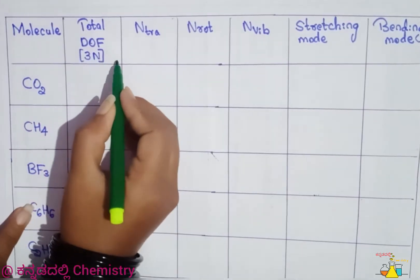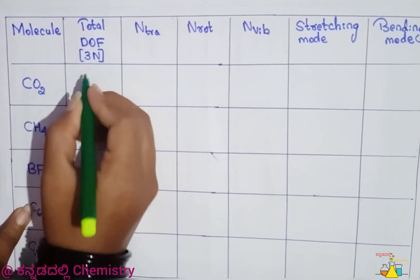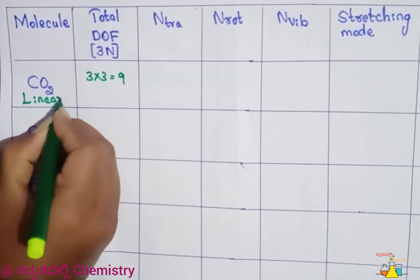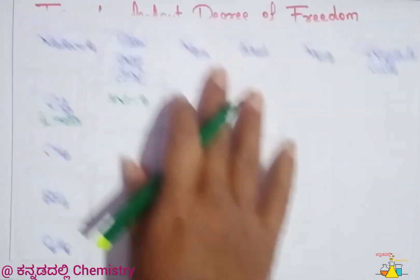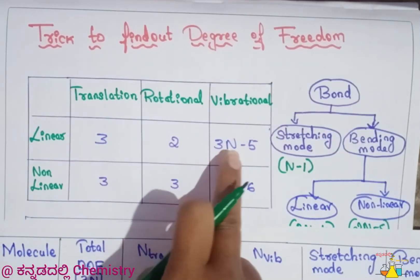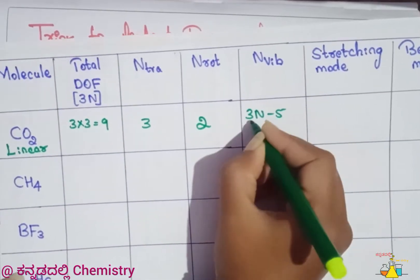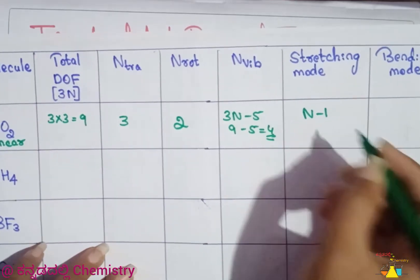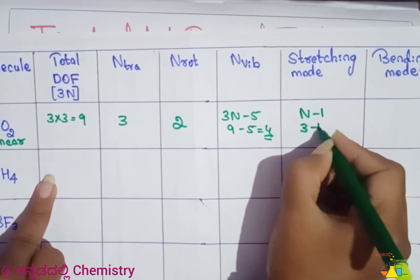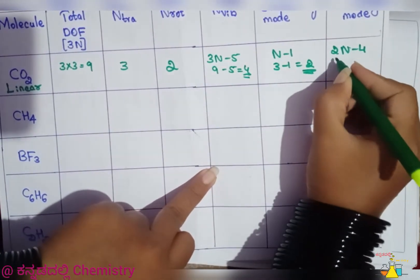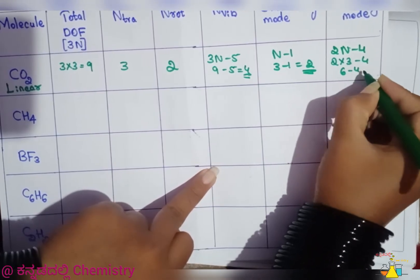Example: 3 atoms (H₂O). Total degrees of freedom = 3n = 3×3 = 9. The molecule is linear, so vibrational = 3n−5 = 9−5 = 4. Stretching mode = n−1 = 3−1 = 2. Bending mode for linear = 2n−4 = 3×3−4? So 6−4 = 2.